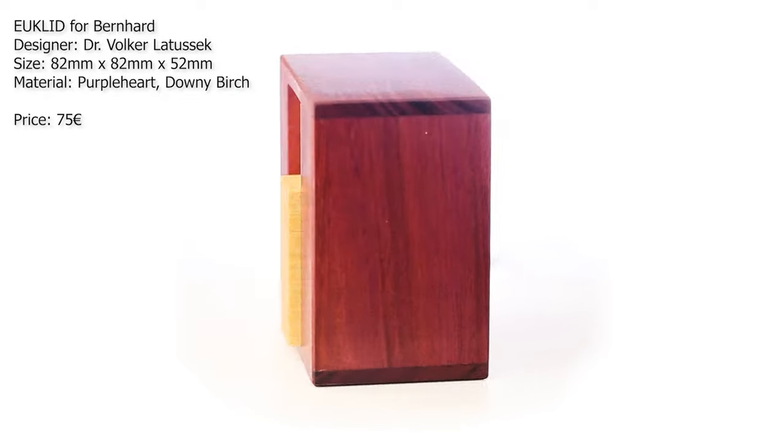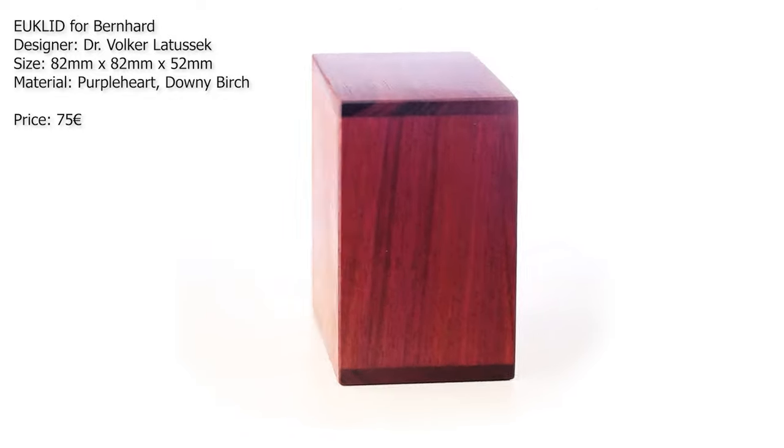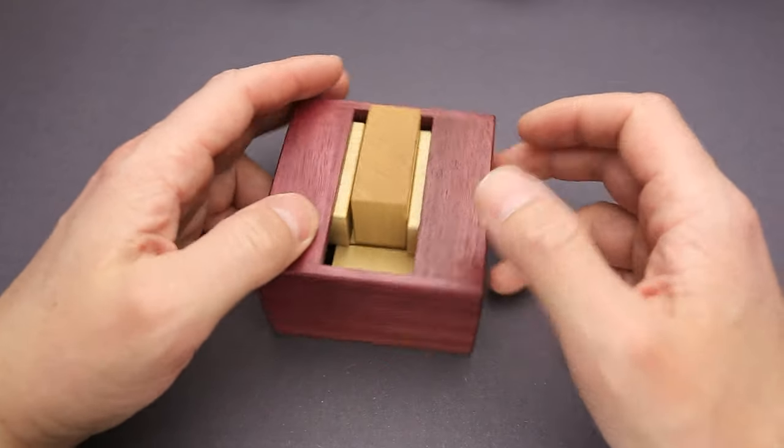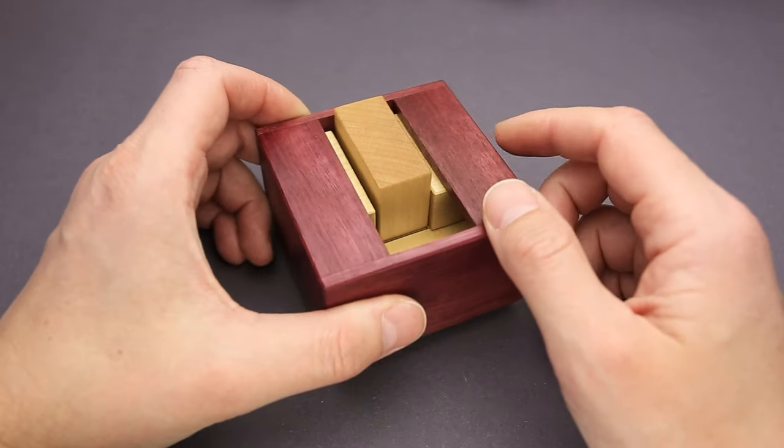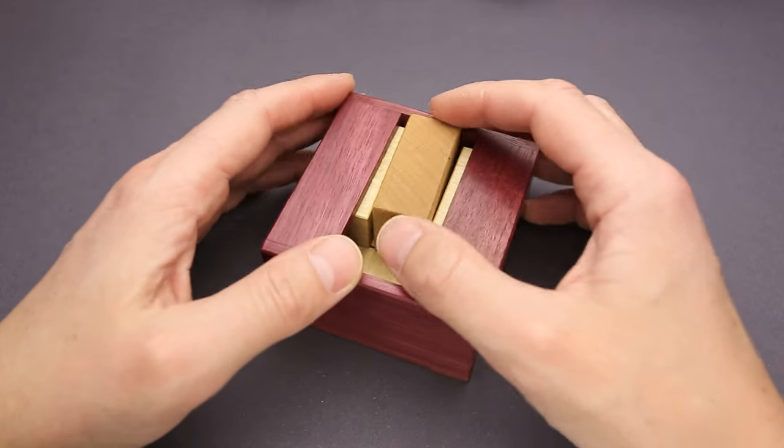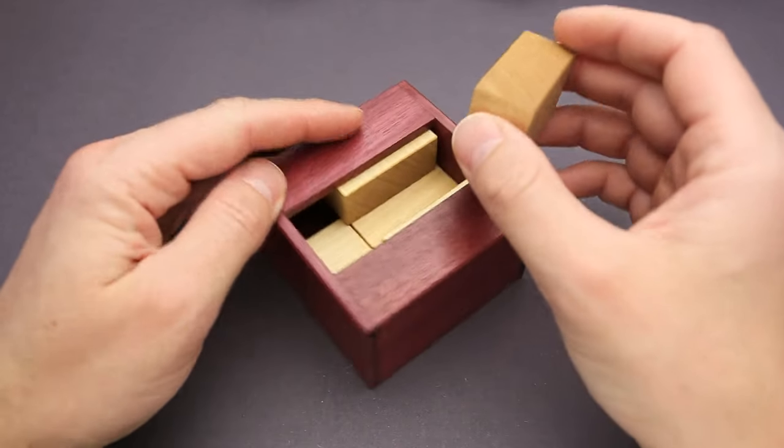And this is the last puzzle from the next Pelikan release. By the style of the puzzle, you can already say that it is Euclid series from Dr. Volker Latussek. And the name of this puzzle is Euclid for Bernard. This puzzle was made using two different types of wood, Purple Heart and Birch.